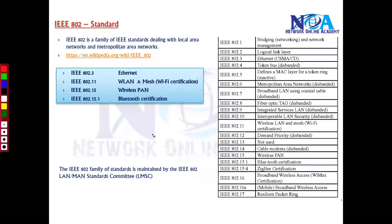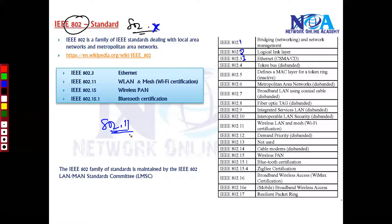When you talk about 802 standards, we call them 802.x standards because the x represents different numbers — one, two, three, four, and so on. There are different standards but the common part is 802. These standards are specifically designated for LAN and MAN implementations.